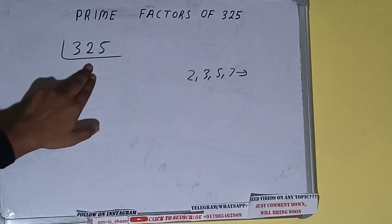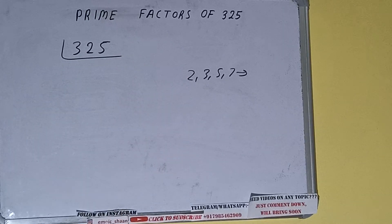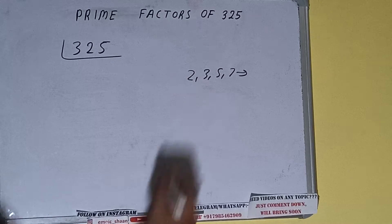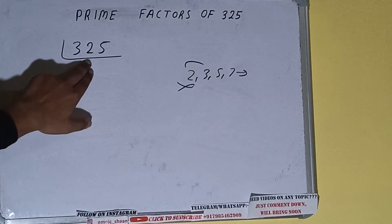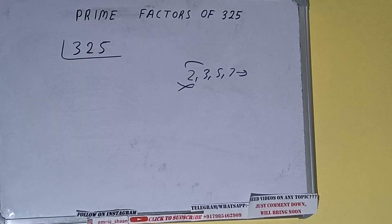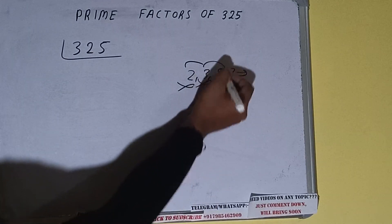Is the number 325 divisible by 2? It is not, because the number is odd. So we'll check with the next lowest prime number, that is 3. Three ones are 3, zero 3. It's a 24 one left. It is not divisible by 3 also.